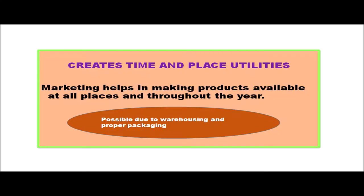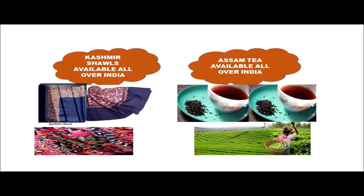Marketing also creates time and place utilities, helping make products available at all places and throughout the year. Products are produced or grown in different places but demand exists elsewhere — this is possible through warehousing and proper packaging. For example, Kashmir shawls are available across India through transportation and storage, and tea grown in Assam is available all over India and even exported.